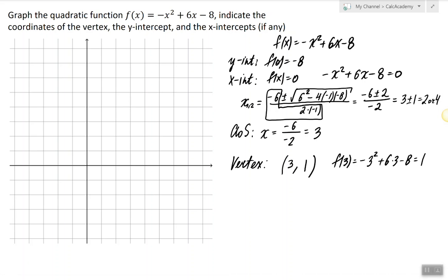Now we have enough information to graph this parabola. Let's start with the y-intercept, so it's at negative eight.